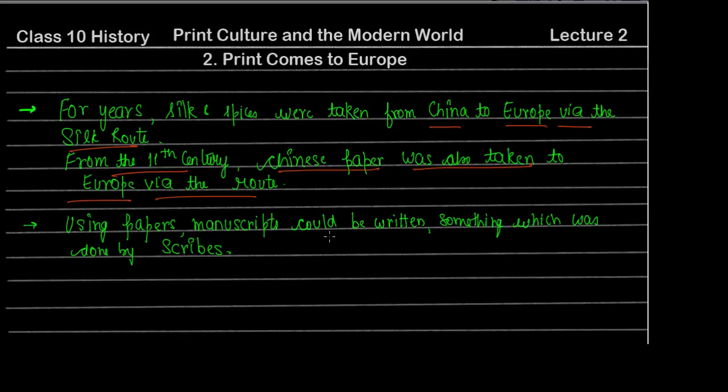Using these papers, manuscripts could be written, something which was done by scribes. Scribes were basically skilled writers who had the job of writing. These manuscripts were very important for historical evidence, literature, and other things.